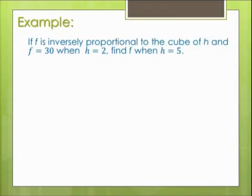Okay, so we've done some direct variation problems, we've done a joint variation problem, and now an inverse variation problem. If f is inversely proportional to the cube of h and f equals 30 when h equals 2, find f when h equals 5.